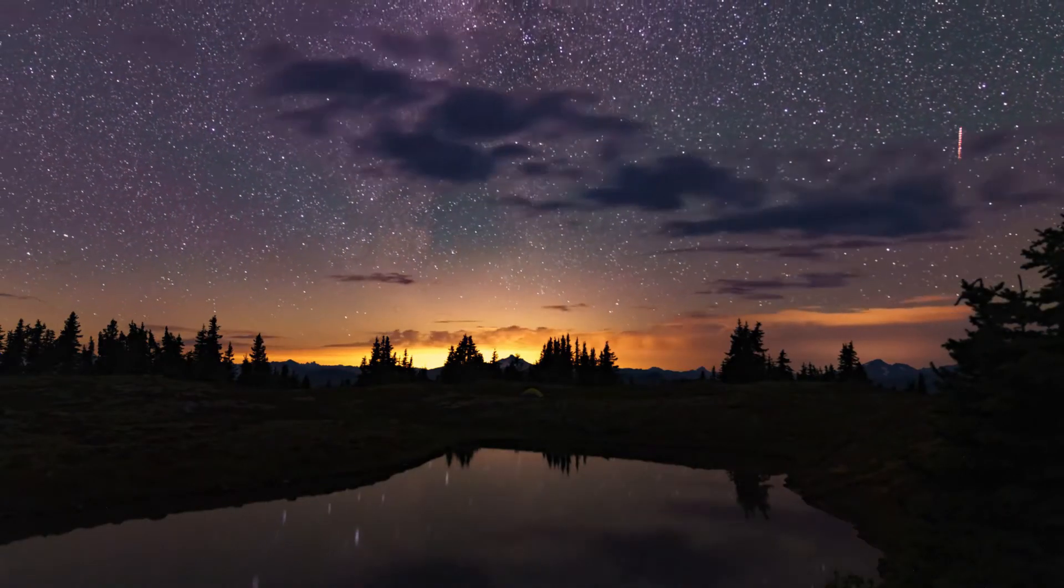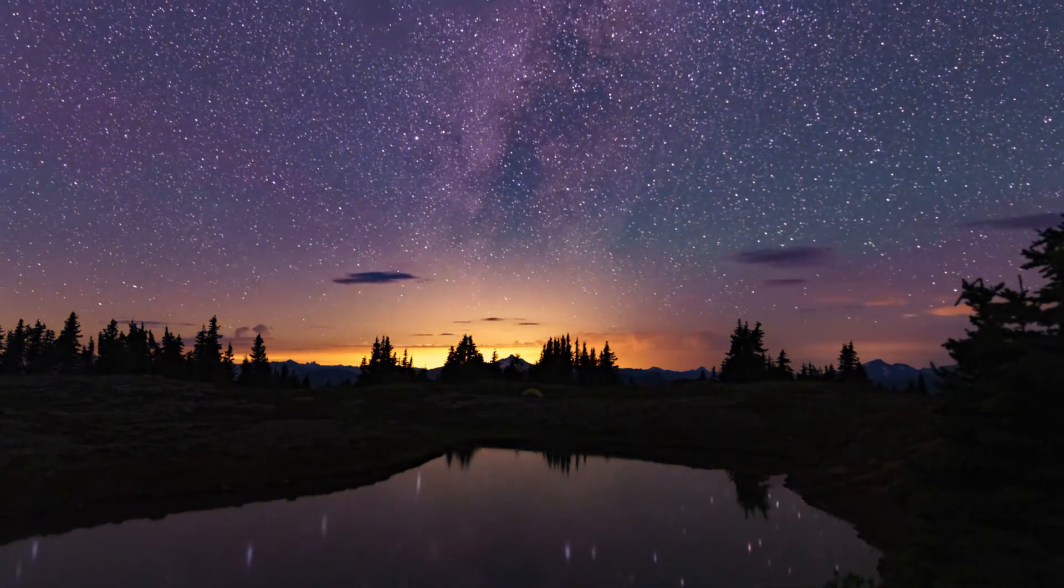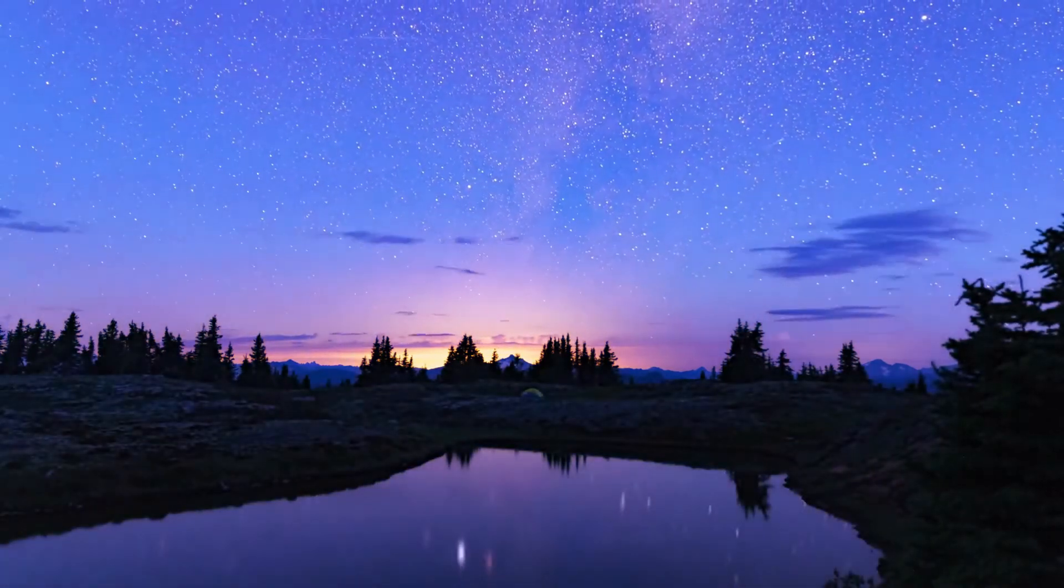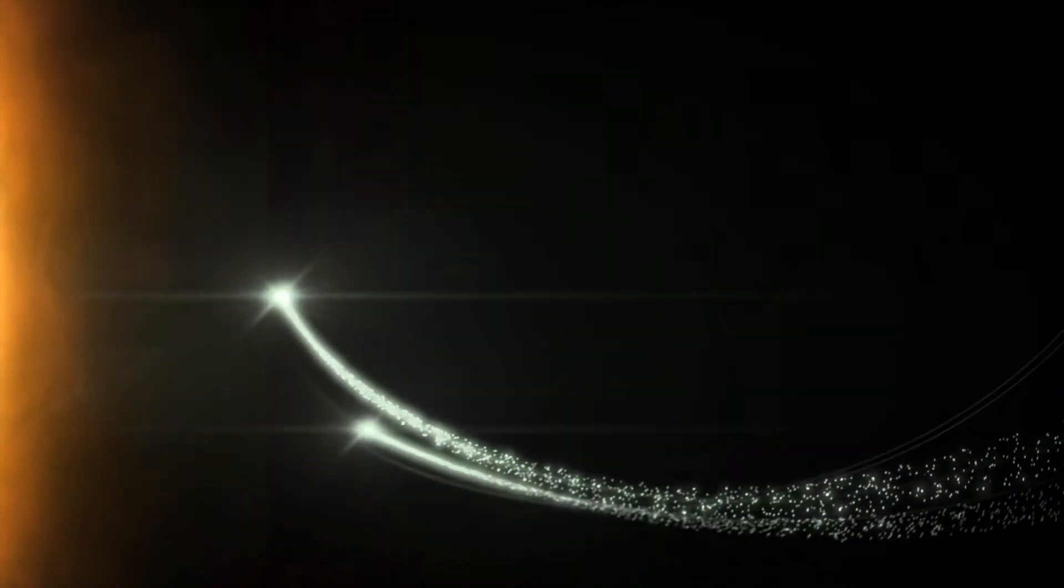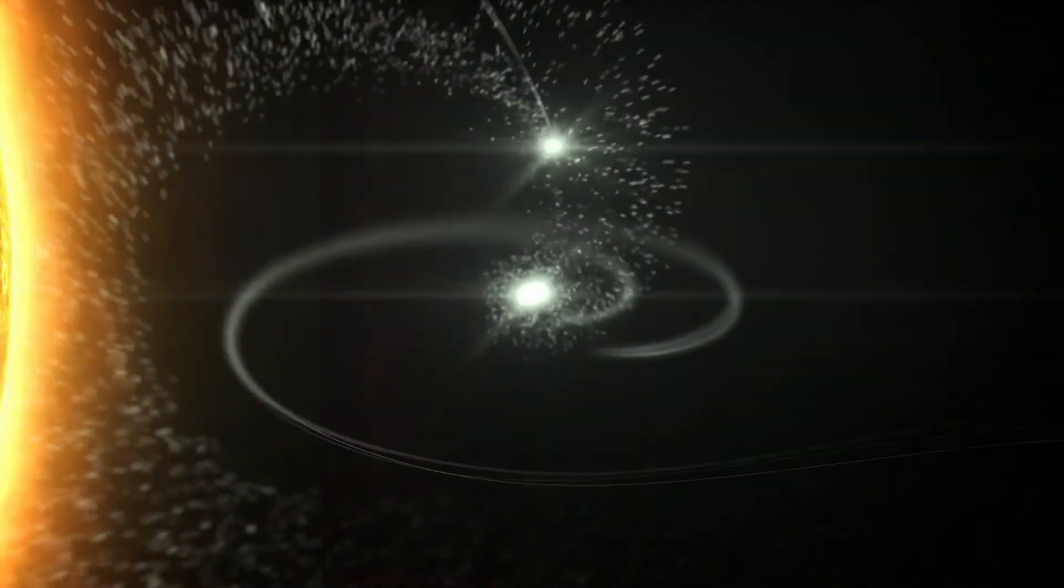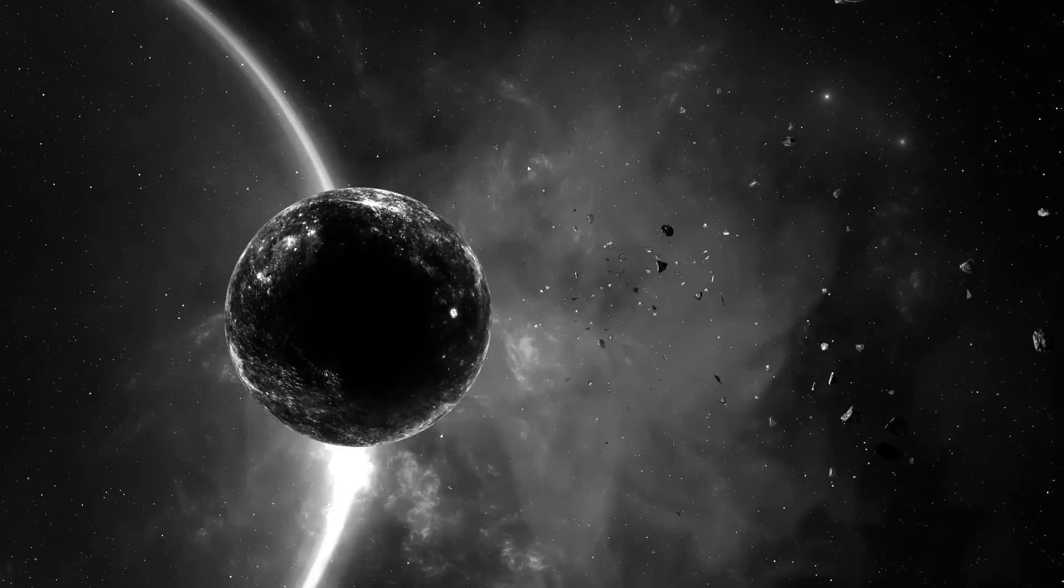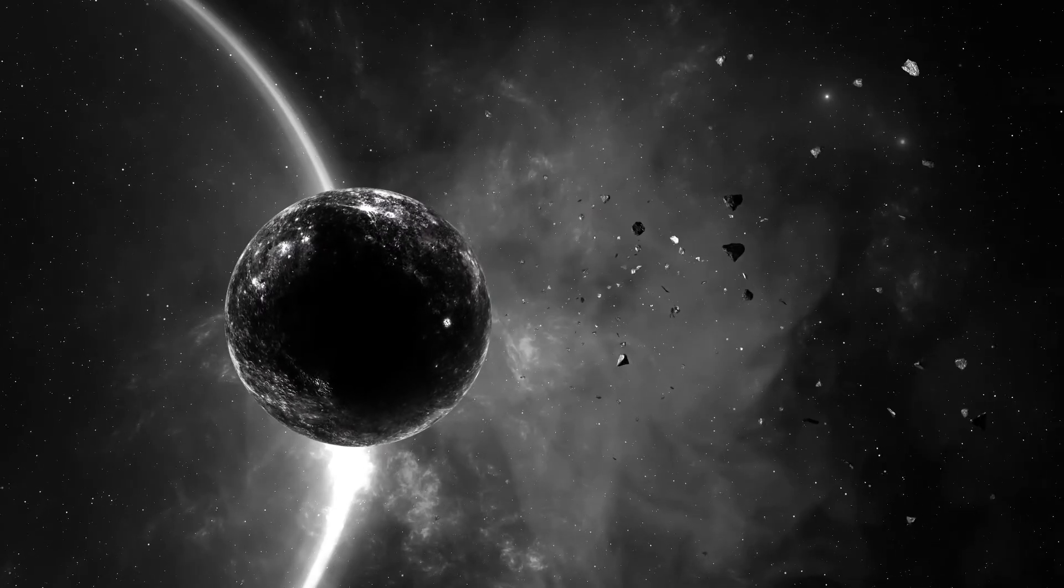The stars are anywhere from dozens to millions of light years away. What that means is that when we look at a star, we are seeing it as it exists today. Take Proxima Centauri as an example. At 4.243 light years from Earth, it is the closest star to our solar system.